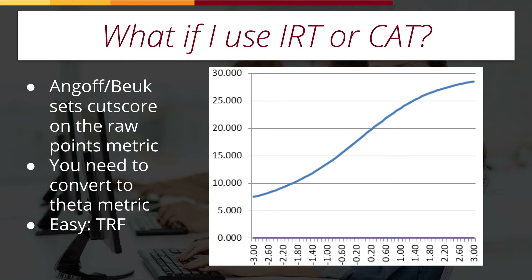Suppose we've got a final cut score and you want to apply it. The final cut score from the Angoff and BUK method is on the raw points metric. If you're delivering a test being scored on a raw points metric — that is, you're just summing up the number of items people got correct — you can go ahead and apply that directly in your test delivery platform. If you're using item response theory or computerized adaptive testing (IRT or CAT), you need to convert this cut score to the theta metric. That's actually fairly easy to do if you've got the test response function from your item parameters — you can reverse engineer it. For example, with a 30-item test, suppose your Angoff cut score came out to be 20 points out of 30. If you look at where the blue line crosses the 20-point line on the test response function and drop a line down to the x-axis, you'll see that's about .20 on the x-axis — so your cut score on the theta metric would be .20.